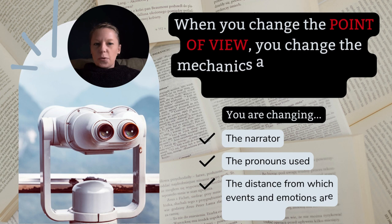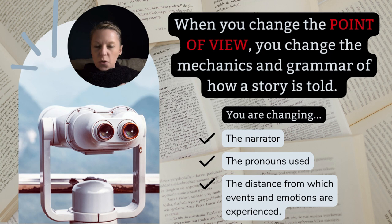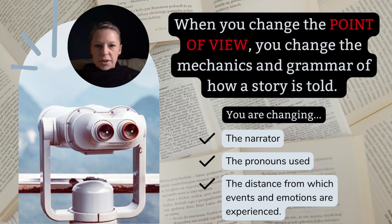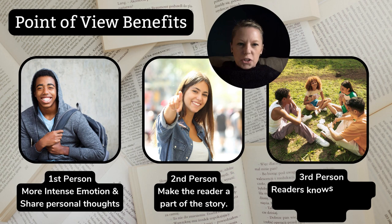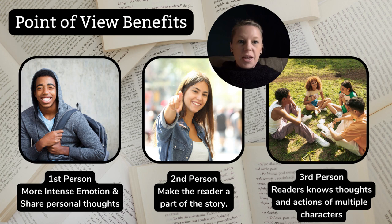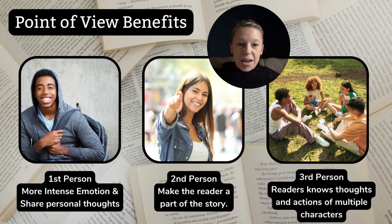When you change the point of view, you change the mechanics and grammar of how a story is told. You're changing the narrator, which changes the pronouns, and also the distance from which events and emotions are experienced. You might wonder why an author chooses one point of view over another. If an author chooses first person, it's likely because they want to show intense emotions and personal thoughts of a singular character. Many books written for middle grade and young adult readers use first person because readers that age spend a lot of time figuring out how to navigate life as themselves.